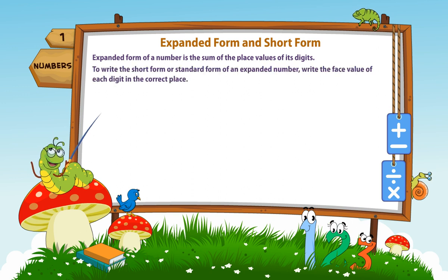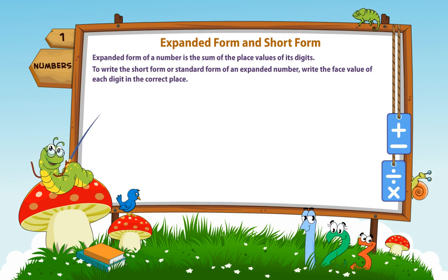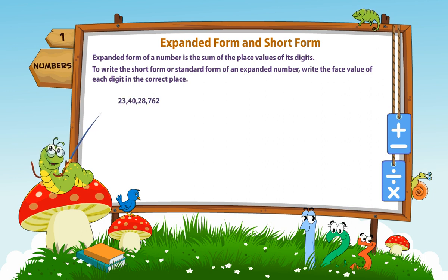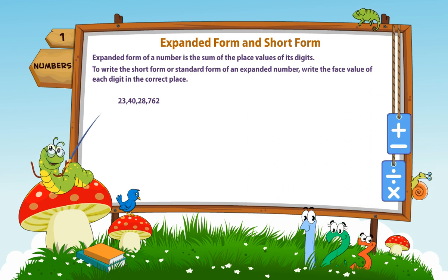To write the short form or standard form of an expanded number, write the face value of each digit in the correct place. 23 crore 40 lakh 28,762 is equal to 2 ten crores...